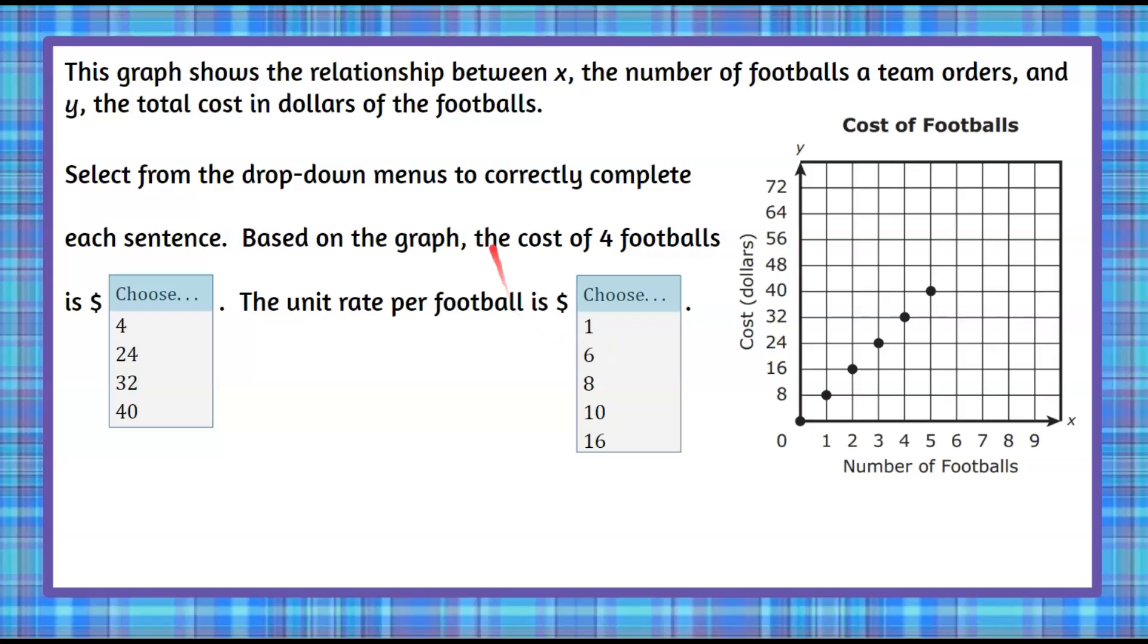Welcome back. So we're given a graph that shows x the number of footballs. So the values are on the horizontal x-axis is the number of footballs: 1, 2, 3. So the cost per football a team orders. And y is the total amount of dollars they spend on the footballs. So here are dollars. So it says how much they buy if they do 1, 2, 3, or all the way up to 9.